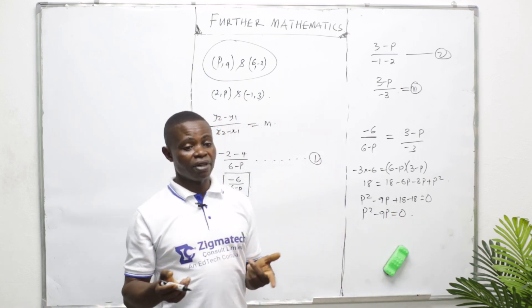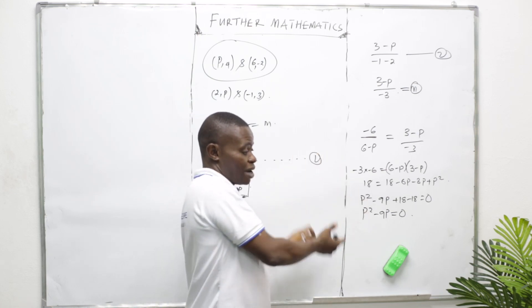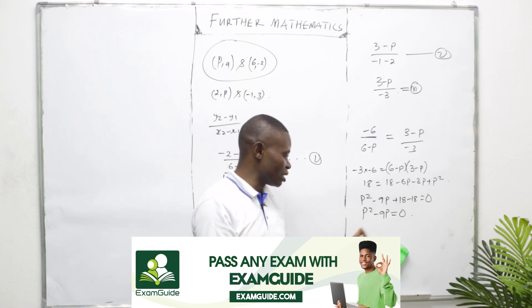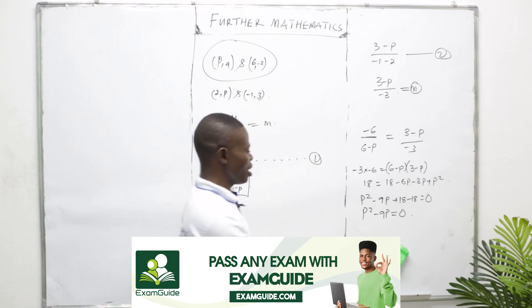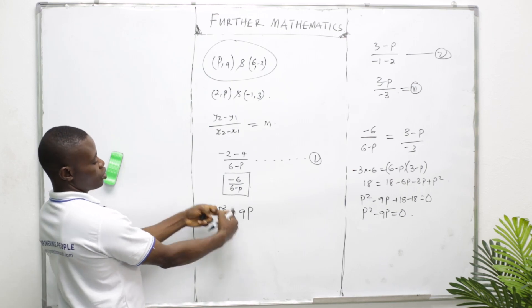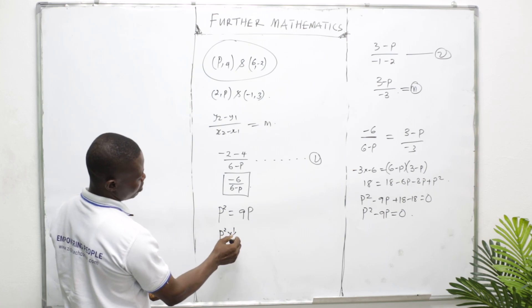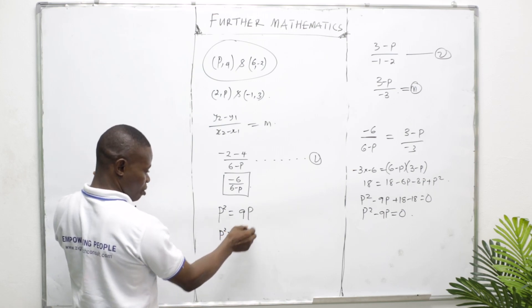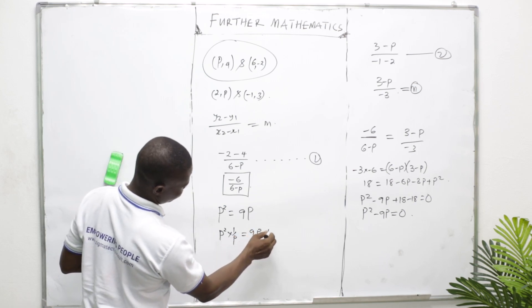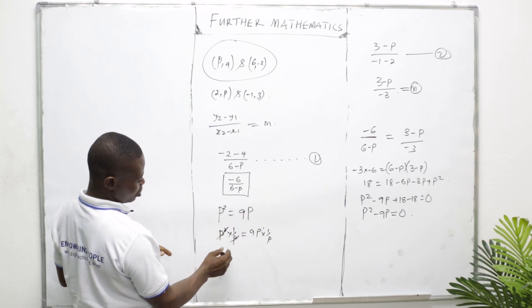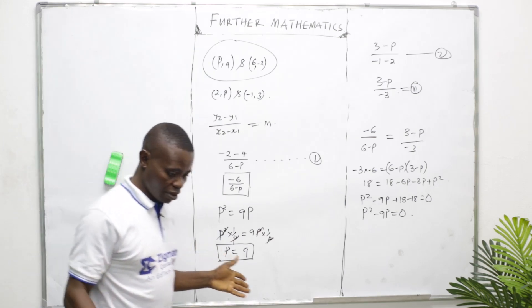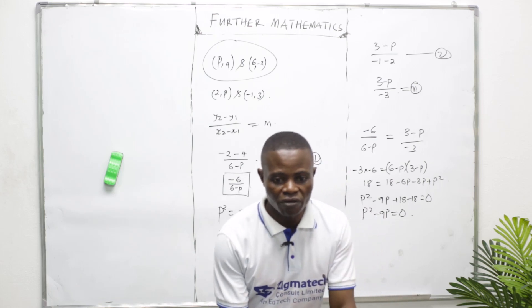We have P² − 9P = 0. This gives P² = 9P. Dividing both sides by P: P = 9. Therefore the value of P is 9.